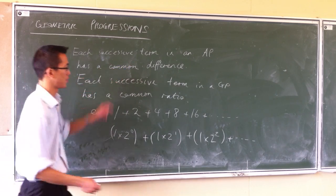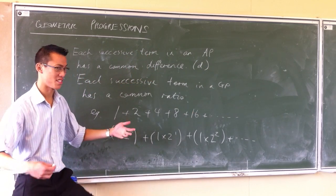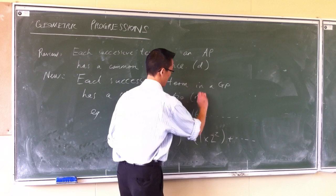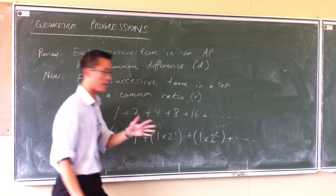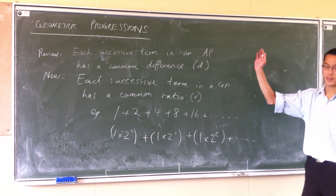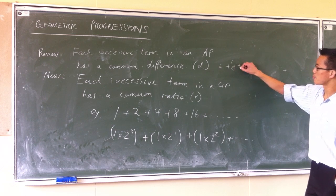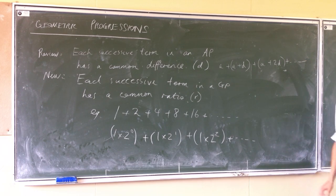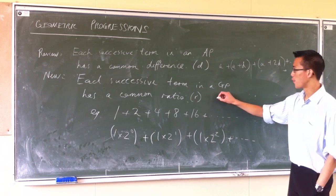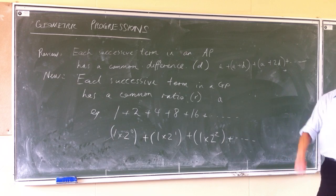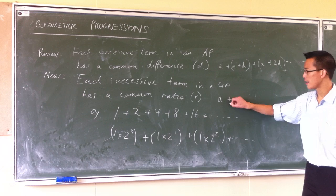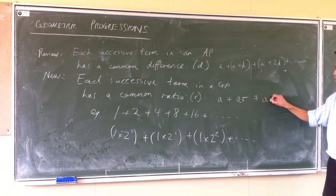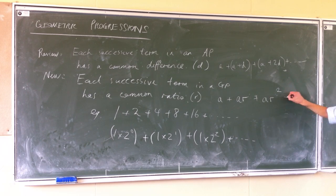Just like we called the common difference D, it makes sense to call the common ratio R. In an AP with first term A, we'd have A, then A plus D, then A plus 2D, and so on. Because we're multiplying and not adding in a GP, the first term is still A, but the next one is A times the ratio R, and then the next one is A times R squared — AR squared — and so on.